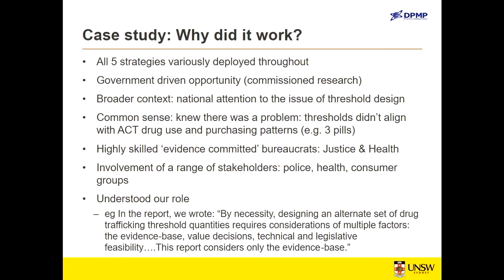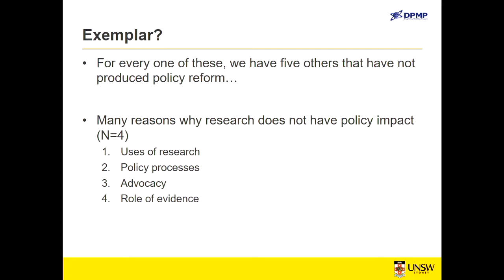But for every one of those successes, we've got five that didn't work. That was monograph 22; we're up to monograph 27. This was an extraordinary one-off — we got lucky and all the stars aligned. We need to talk about why it doesn't work, because that is the much more common experience.